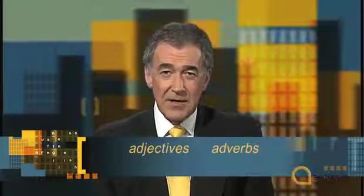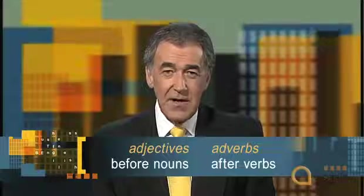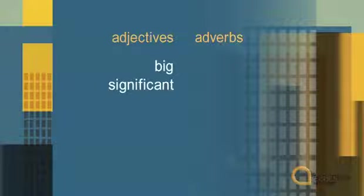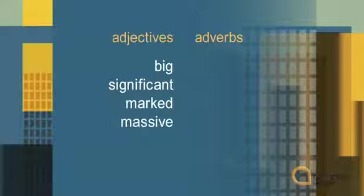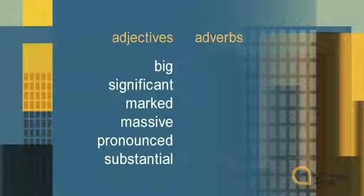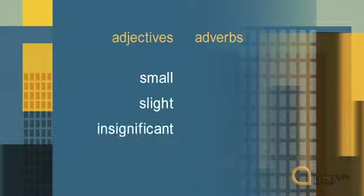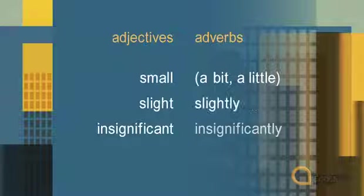But we often add more descriptive words — adjectives and adverbs. Remember, adjectives go before nouns and adverbs go after verbs. These describe the change in figures. Was it big or small? Fast or slow? Other words for a big change are significant, marked, massive, pronounced, substantial. Most adjectives can also be made into adverbs by adding -ly. There is no adverb for big, but informally we say 'a lot.' Other words for small are slight and insignificant, and their adverbs slightly and insignificantly.